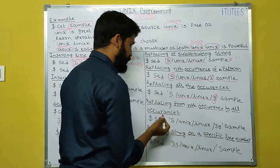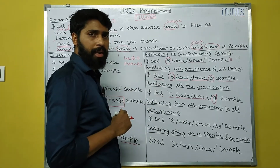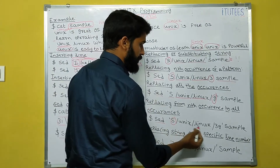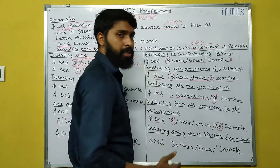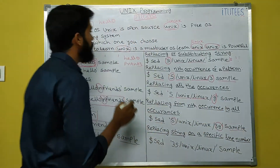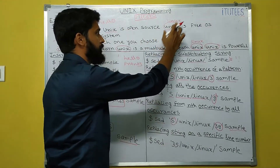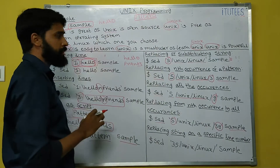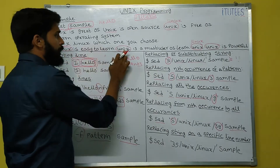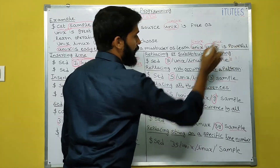Replacing from the nth occurrence to all occurrences: for example, to change unix to linux from the third occurrence onwards, use: SED 's/unix/linux/3g' sample. '3g' means from the third occurrence to all remaining. So the first two occurrences are unchanged, but from the third occurrence onward — including the fourth — unix is changed to linux.